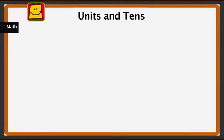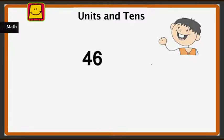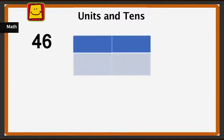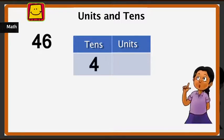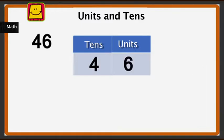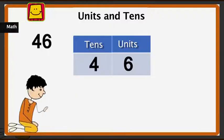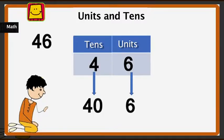Now let us take another number and understand the tens and units. Let us first see how we break it up into tens and units. We have 4 in the tens place and 6 in the units place. What is 4 tens? 2 tens was 20, 3 tens is 30, so 4 tens is 40.